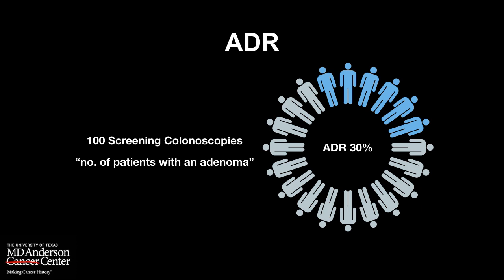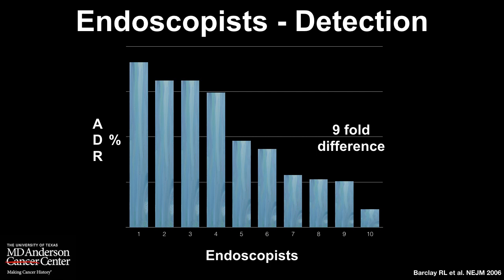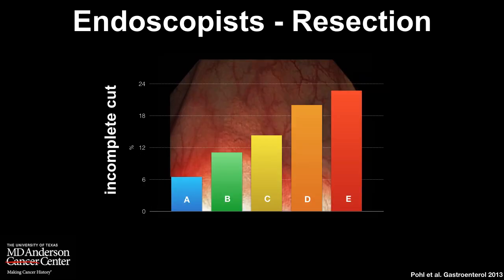In reality there is a wide variation in detection rate. Let's look at this landmark paper published in the New England Journal of Medicine about 15 years ago from a practice in Rockford, Illinois. What they showed is that there is a nine-fold difference in adenoma detection rate among the endoscopists in that practice — and that is a huge difference. In another paper from Hycopole, we learn that the completeness of resection varies from endoscopist to endoscopist, and also varies depending upon the size and nature of the lesion.